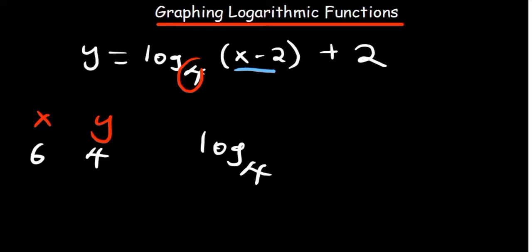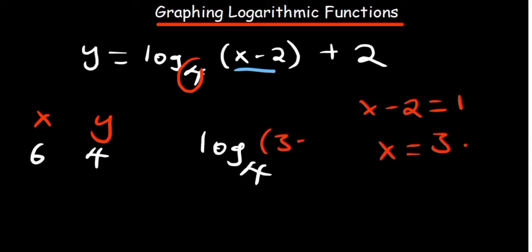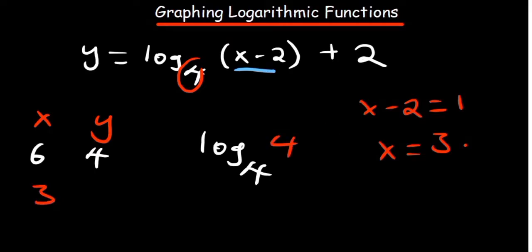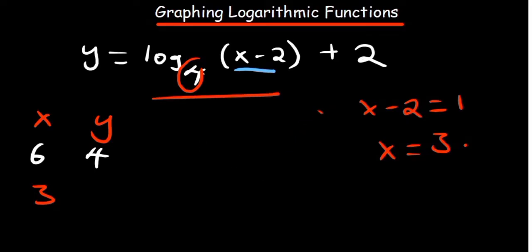The other point: we want what's in the brackets to equal 1, because whatever base you have with a 1, it's going to give 0 — making it 4 to the power of 0. In this case what's in the brackets is x minus 2. So I equate x minus 2 equal to 1. You're going to find that x is basically equal to 3. So when you put 3 minus 2, you have 1. So the log part equals 0, and y equals 0 plus 2, which is 2.